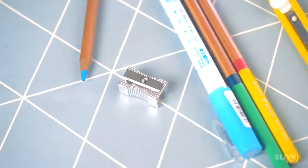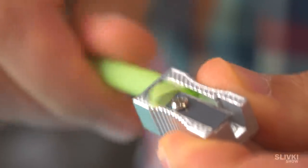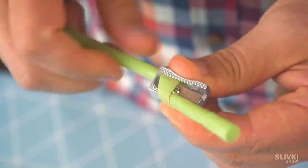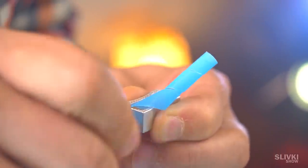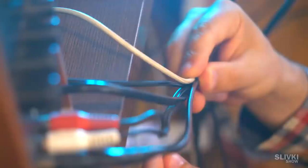All you need is a few thick tubes and a regular pencil sharpener. Just take a tube and pass it through the sharpener like it's a pencil, and we end up with this beautiful spiral.